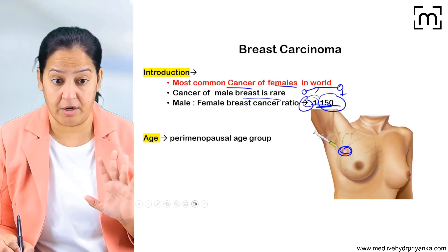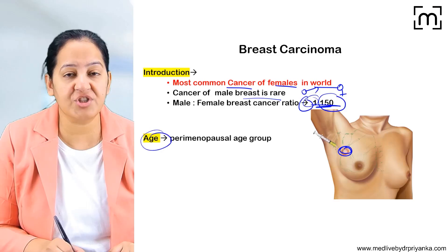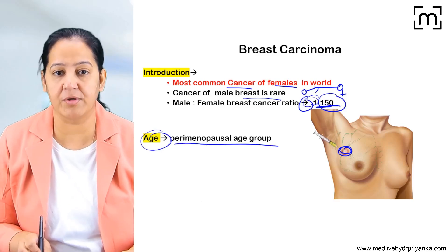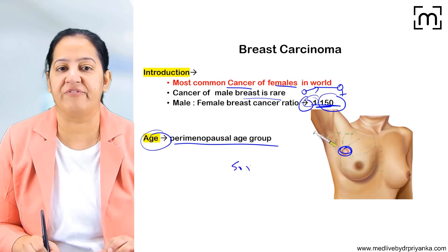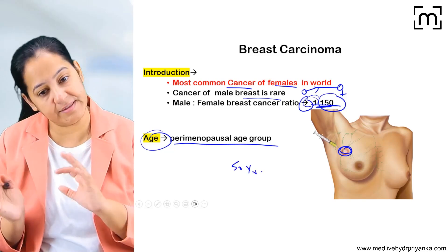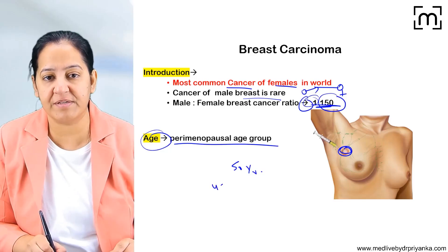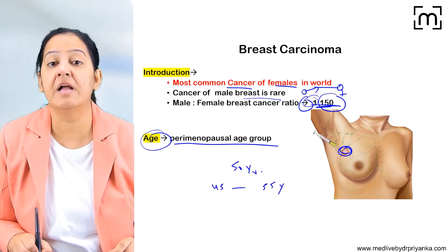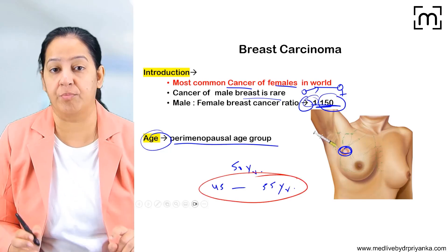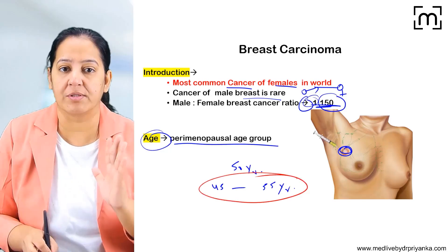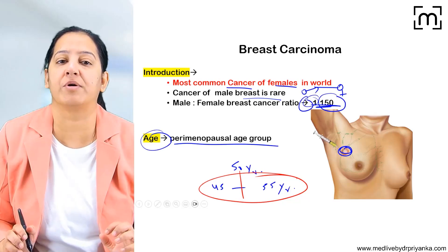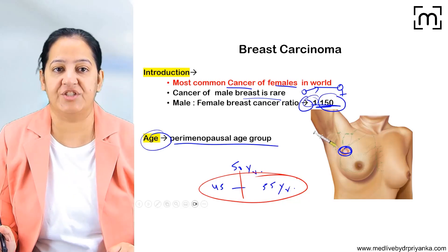What is the most common age of presentation in females? In females, the most common age of presentation is perimenopausal. Menopause usually occurs at around 50 years, so it occurs a few years before or a few years after menopause. The most common age of presentation is 45 to 55 years — about 90 percent of breast cancers occur in this age group. This is known as the perimenopausal age.